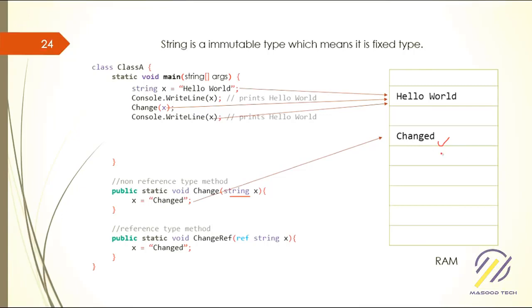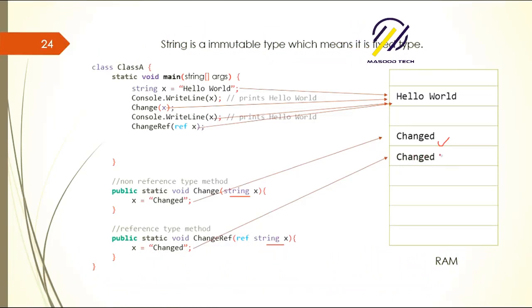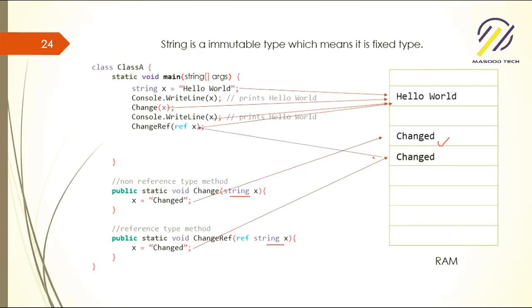When you use the ref keyword, the memory location reference is passed to the function. When X is reassigned to 'changed' inside the function, a new memory location is created for 'changed'. But this time, when the function exits, the reference is updated to point to the new memory location. So when you print it, you get 'changed'.